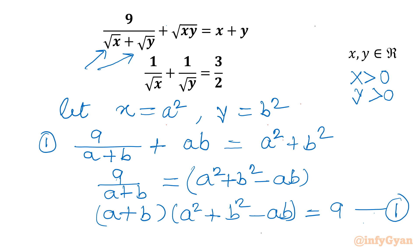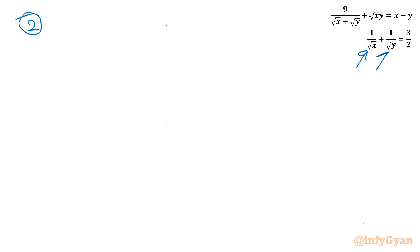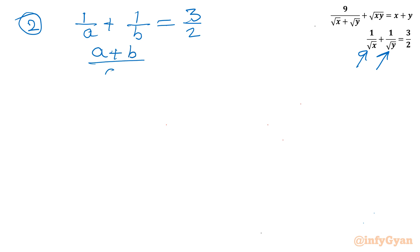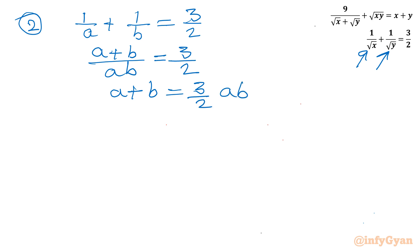Now I will simplify the second equation. Since x = a², we write 1/a + 1/b = 3/2. Taking LCM: (a + b)/(ab) = 3/2, so a + b = (3/2)ab. This is equation 2.